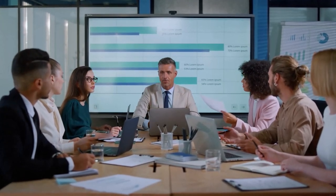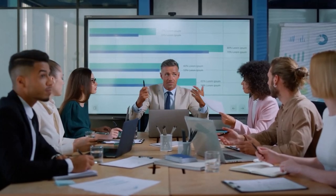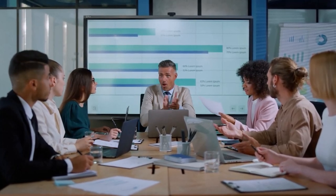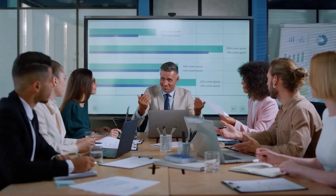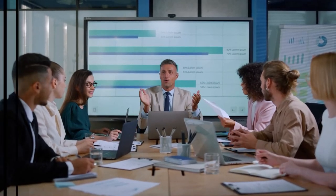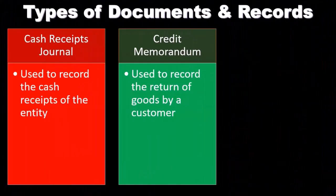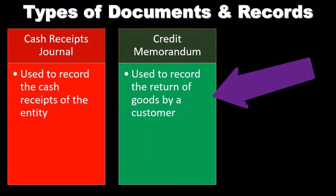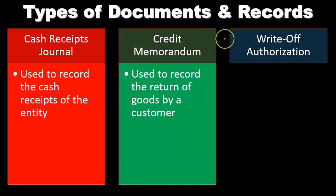The credit memorandum is essentially a reversal — it reverses the sales transaction. The easiest way to think about it is to start with the original sales transaction and then reverse it, making adjustments such as replacing 'sales' with 'sales returns and allowances.' The credit memorandum form can be a little confusing to analyze when dealing with returns.